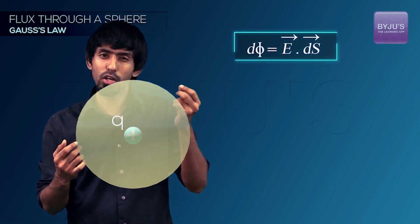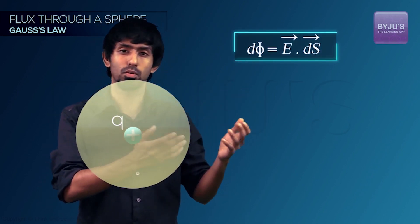So we have your sphere over here. Now why did we choose a sphere? Because we are lazy. Our E dot dA becomes extremely easy. Why?